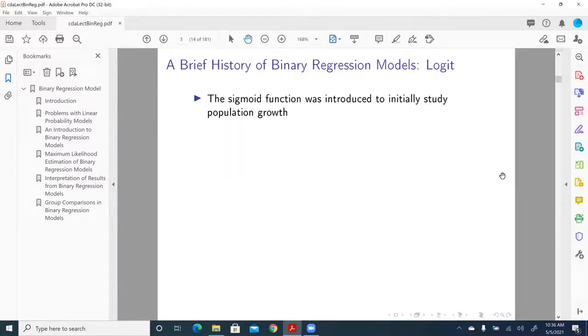Then is the logit model. Logit model is used when the error term of a structural model is assumed to follow standard logit distribution. Sometimes the logistic distribution is called the sigmoid function. The sigmoid function was introduced to initially study population growth.